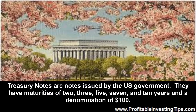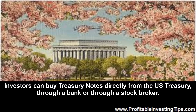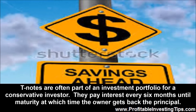Treasury Notes are notes issued by the U.S. government. They have maturities of 2, 3, 5, 7, and 10 years and a denomination of $100. Investors can buy Treasury Notes directly from the U.S. Treasury, through a bank, or through a stockbroker. T Notes are often part of an investment portfolio for a conservative investor. They pay interest every six months until maturity, at which time the owner gets back the principal.